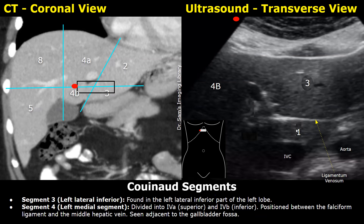This is a coronal CT image showing the interior aspect of the liver. Segments 2 and 3 are in the left lobe. Segment 4 is divided into 4a superior and 4b inferior — it is the middle part of the liver, between the falciform ligament and the middle hepatic vein, near the gallbladder fossa. Segments 4a and 2 are touching the diaphragm, and segment 4b is in contact with the gallbladder.